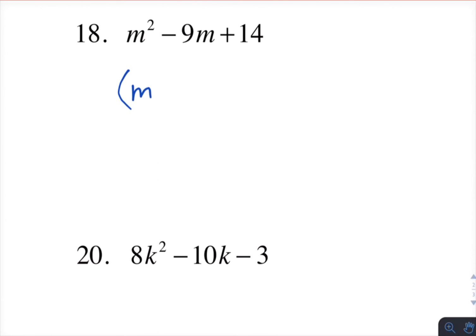Similarly here, I know I need m and m. I need factors of 14. So 1 and 14 are my choices, or maybe 2 and 7. I can see that 2 and 7 are going to get me the negative 9m that I need in the middle. So those are the ones I use.